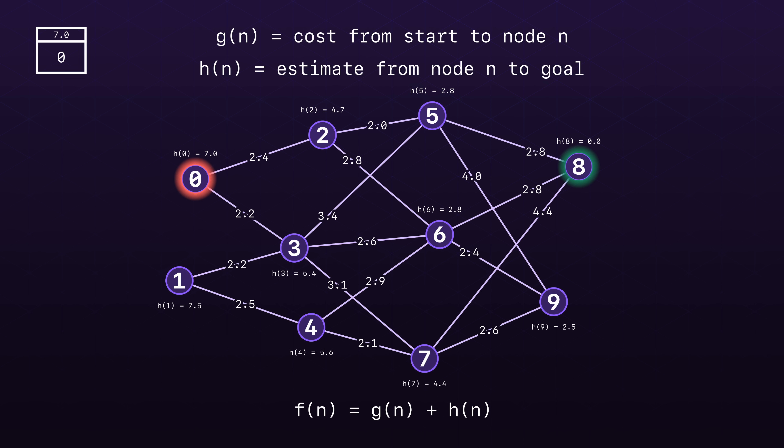Initially, only node 0 is in the queue with the priority of 7, determined by its heuristic estimate h of 0 of 7. Since we haven't covered any distance yet, g of 0 remains 0. After popping off node 0, we add its neighbors 2 and 3. Node 2 has a heuristic value of 4.7.